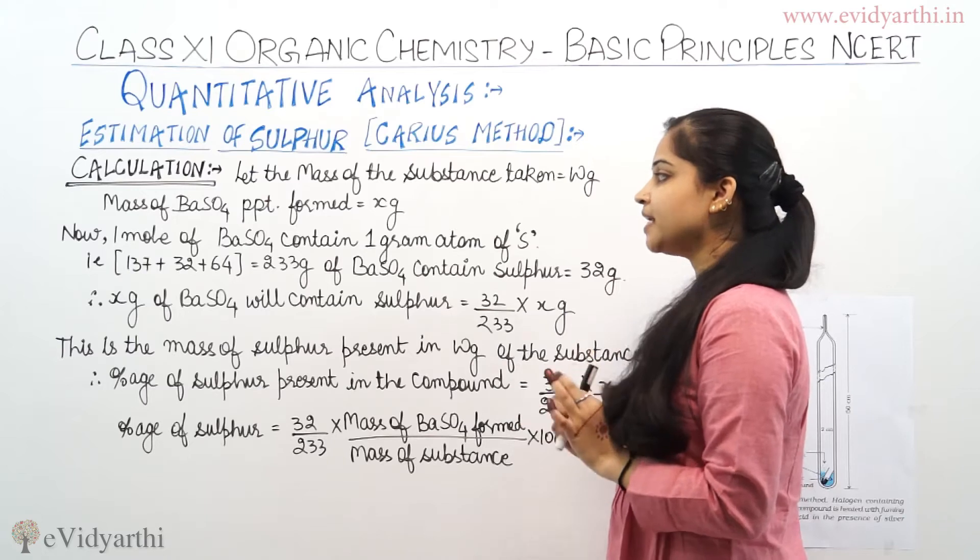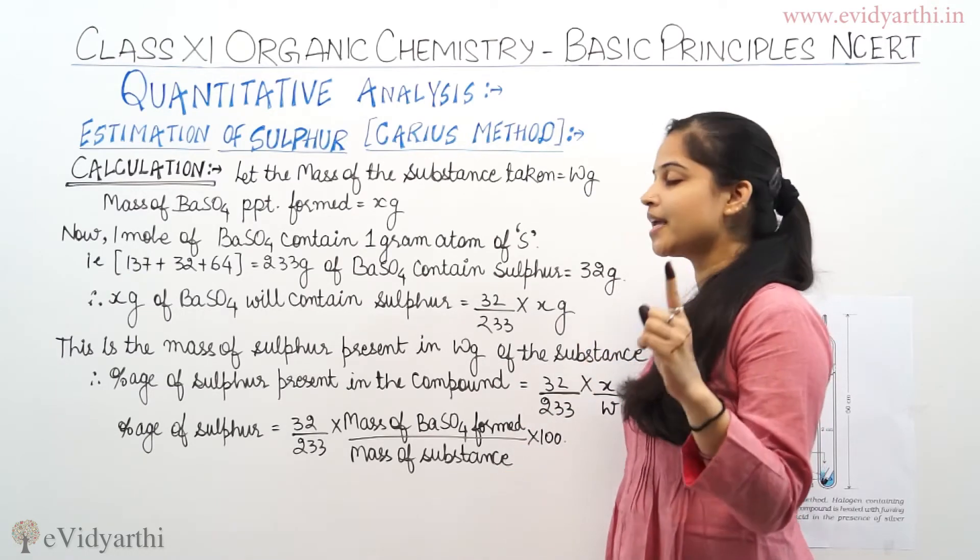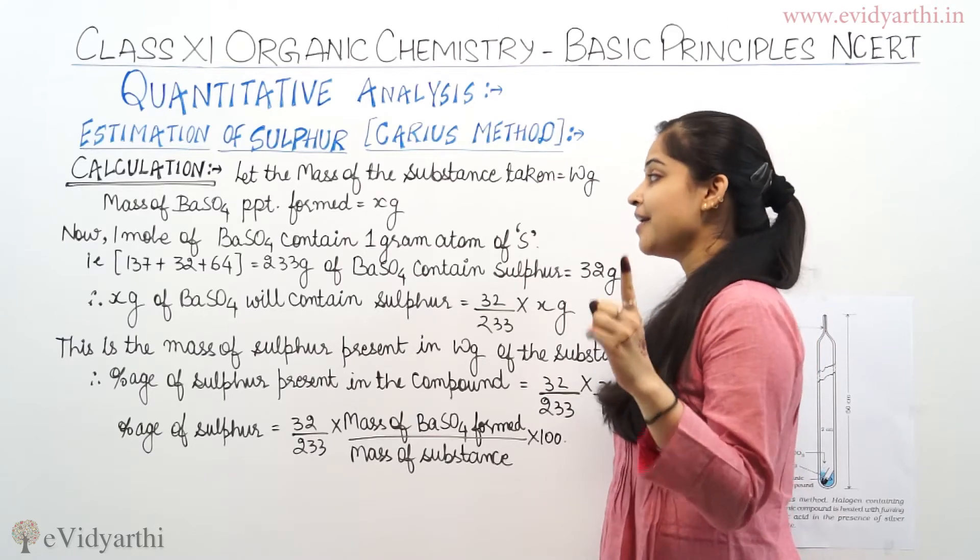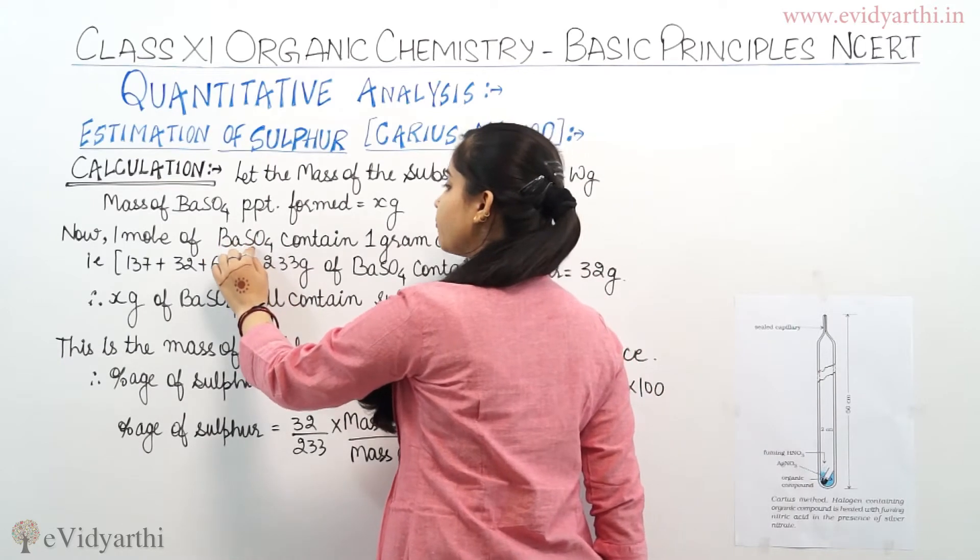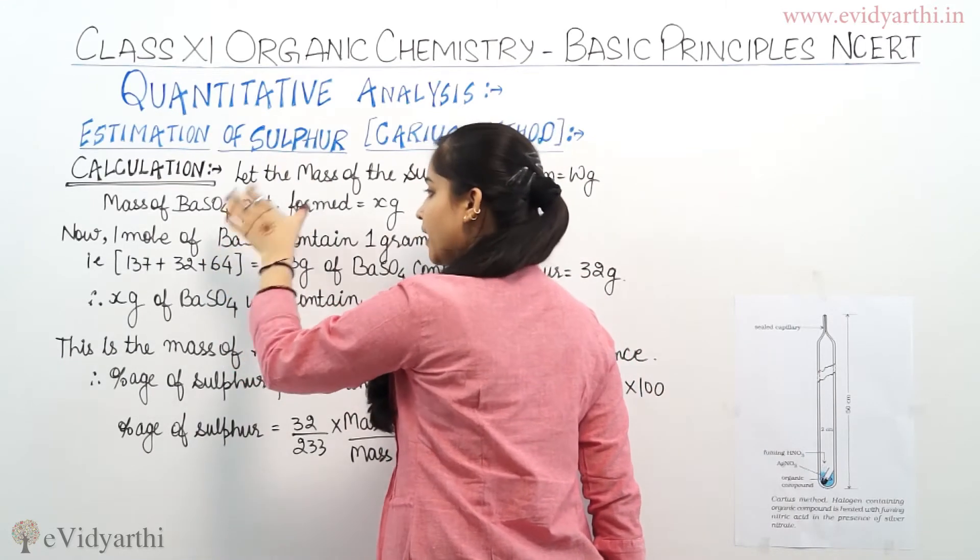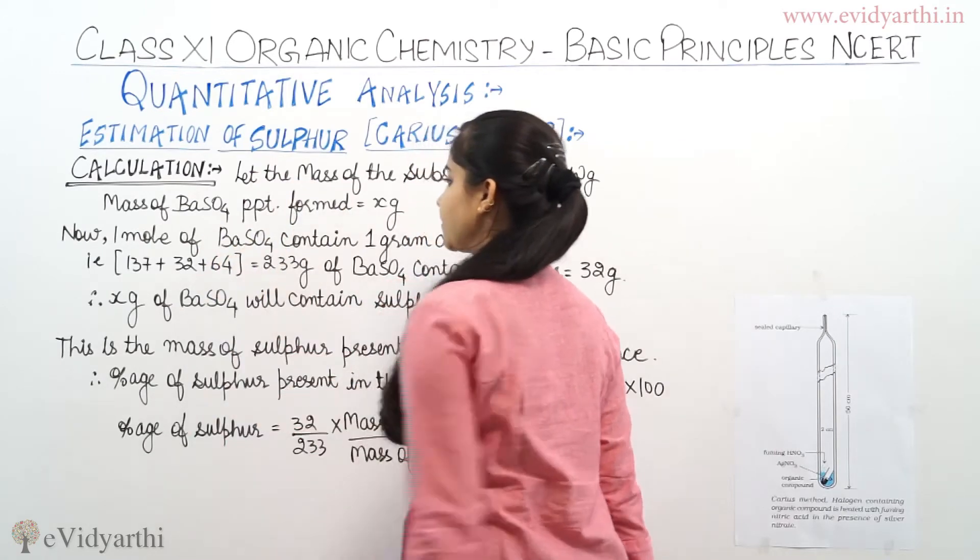Now, one mole of BaSO4 contains one gram atom of sulfur. This BaSO4 has only one atom of sulfur, so one mole of BaSO4 contains one gram atom of sulfur.